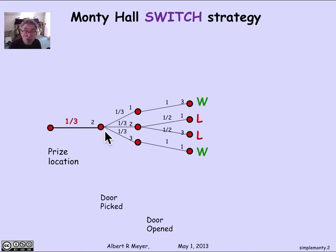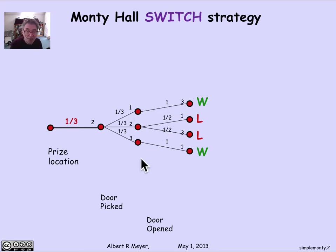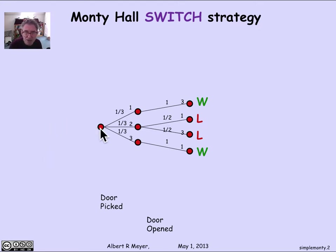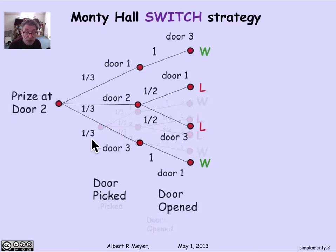If the prize was at door two and the contestant picked door two, then Carroll has a choice of two doors — one or three — to open. On the other hand, if the prize was at door two and the contestant picked door one, Carroll has no choice but to open door three with probability one. The first branch is kind of fixed and forced, so we don't really need it. What we're really analyzing is what happens starting at the stage where the contestant picks a door.